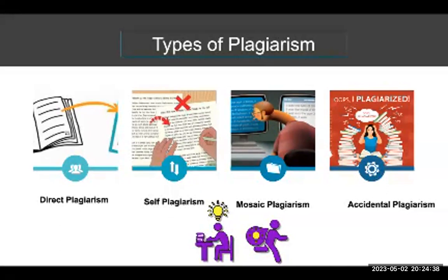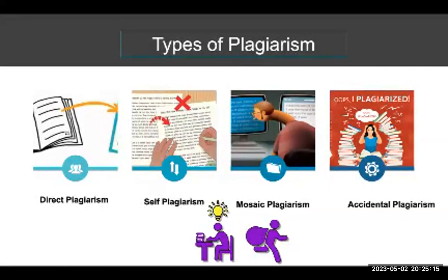The last type is accidental plagiarism. Accidental plagiarism occurs when a person neglects to cite their sources, miscites their sources, or unintentionally paraphrases a source by using similar words, groups of words, or sentence structures without attribution. Students must learn how to cite their sources and take careful and accurate notes when doing research, because lack of intent does not absolve students of responsibility. Cases of accidental plagiarism are taken as seriously as any other plagiarism.